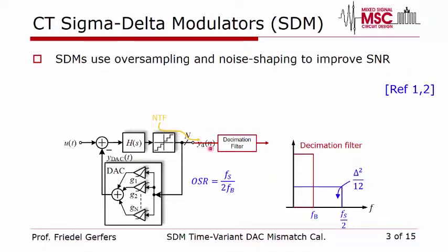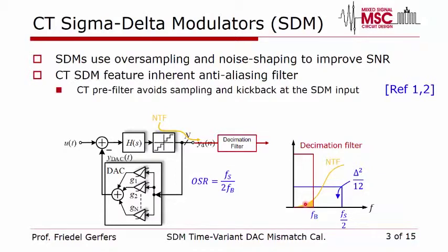Due to the feedback loop we also have a noise transfer function, so the noise entering at the quantizer is noise-shaped, shifting most quantization noise to higher frequencies. Only the error shown here in yellow remains in the passband, significantly improving the quantization noise performance of the Sigma-Delta.